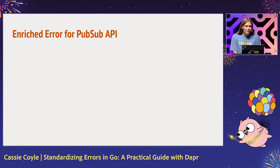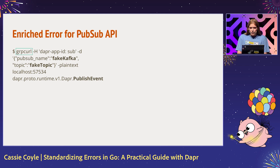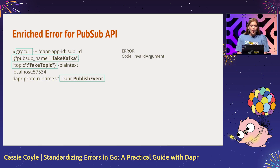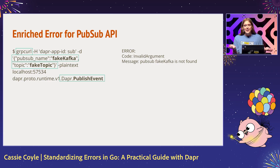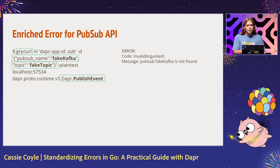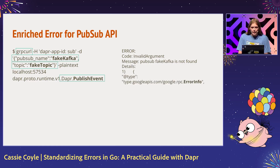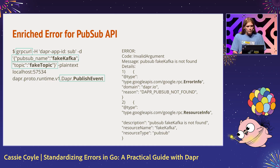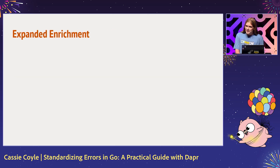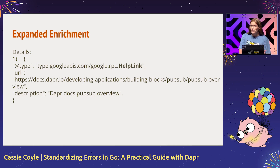Let's look at that enriched error for our PubSub API. If I were to run a gRPC curl using a fake Kafka and a fake topic name, hitting our Dapr publish event endpoint, I used to get this exact error — pretty simplified, forcing it since fake Kafka is obviously not found. But we just saw all those error details that we can use to enrich this error output for our users. So now in Dapr today, we give our users these error details — two of them for this specific API: error info and resource info. We're giving our users more actionable information to enable them, and this can be further expanded to give them a URL link so they are one click away from helping themselves.